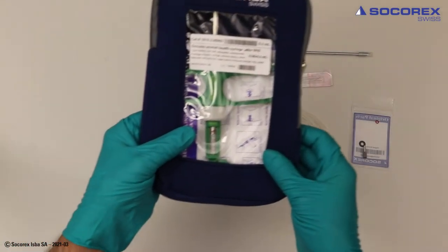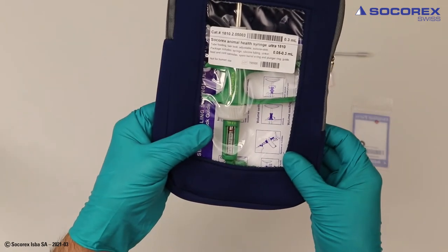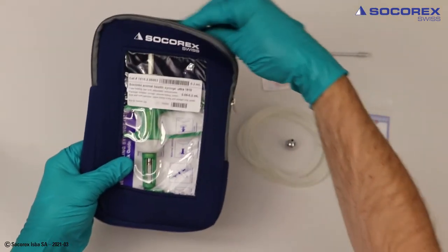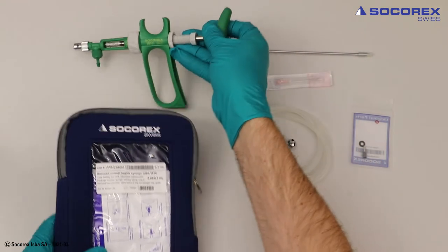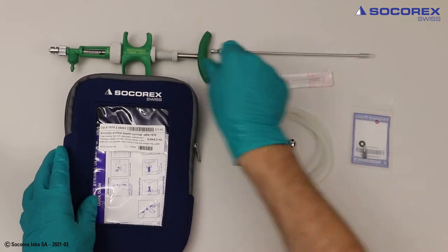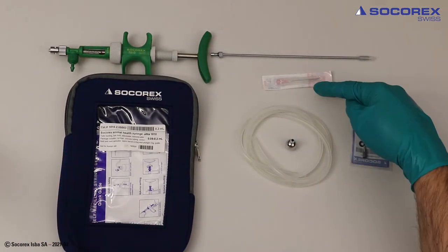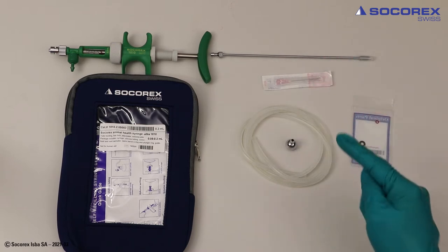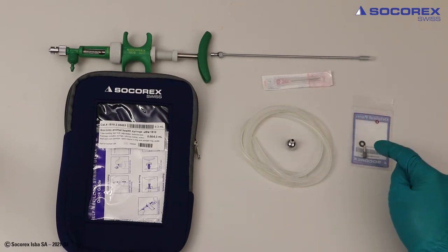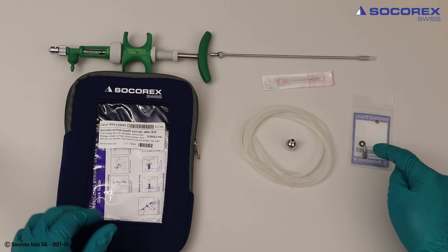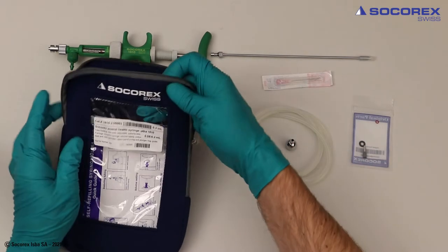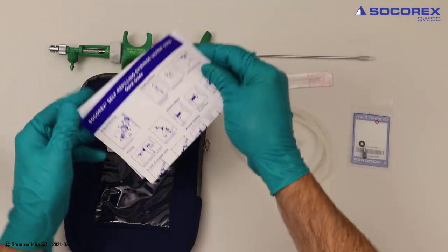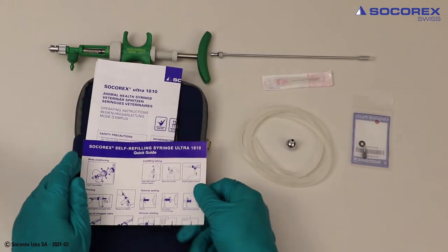The SoccerX 1810 Ultra Syringe is supplied in a smart reusable pocket. It contains the syringe itself, field needle, vent cannula, sinker, silicone tube, a small spare part bag with o-ring, o-ring guide and washer. Quick guide and operating instructions are also included.